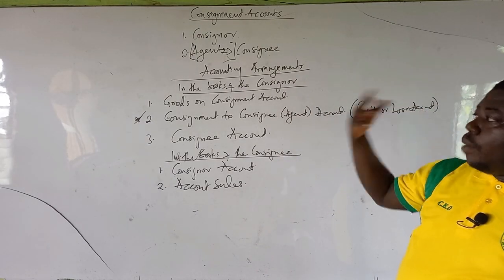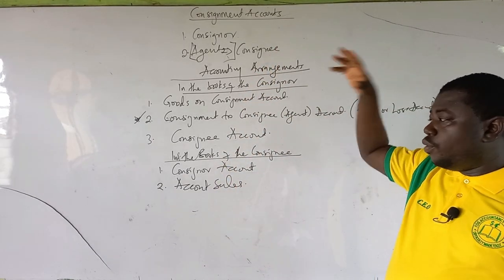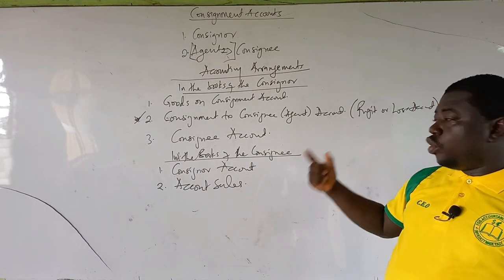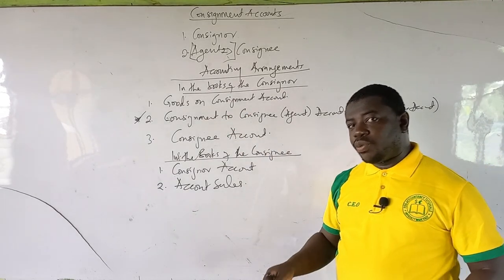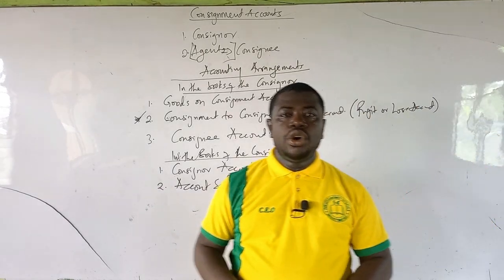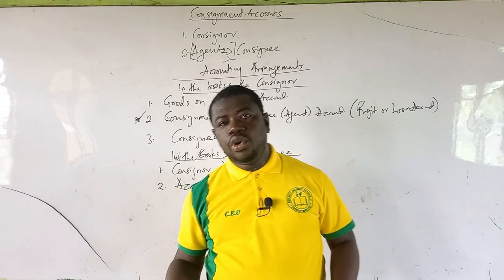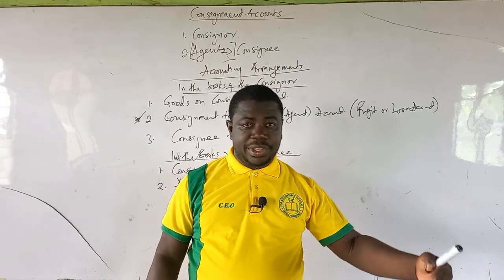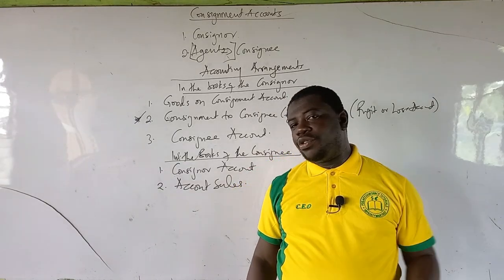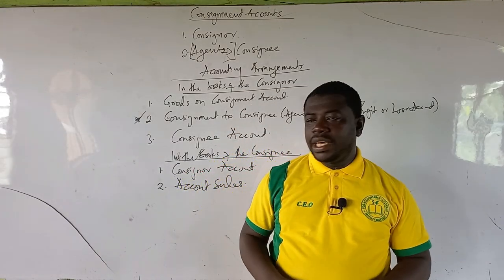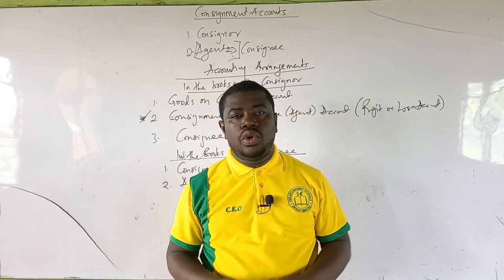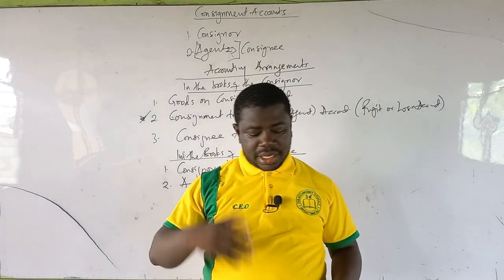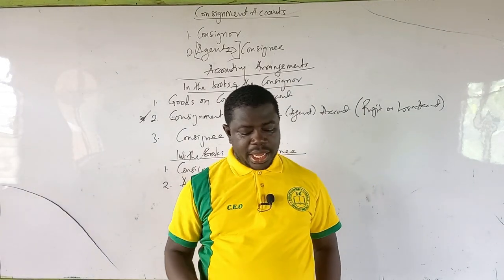We are going to pick a basic question, solve it, and use it to explain these accounts. In this video, I'll cover the scenario where all goods on consignment were sold, so there is no closing stock. In the next video, I'll look at closing stock valuation and treatment of stock losses.